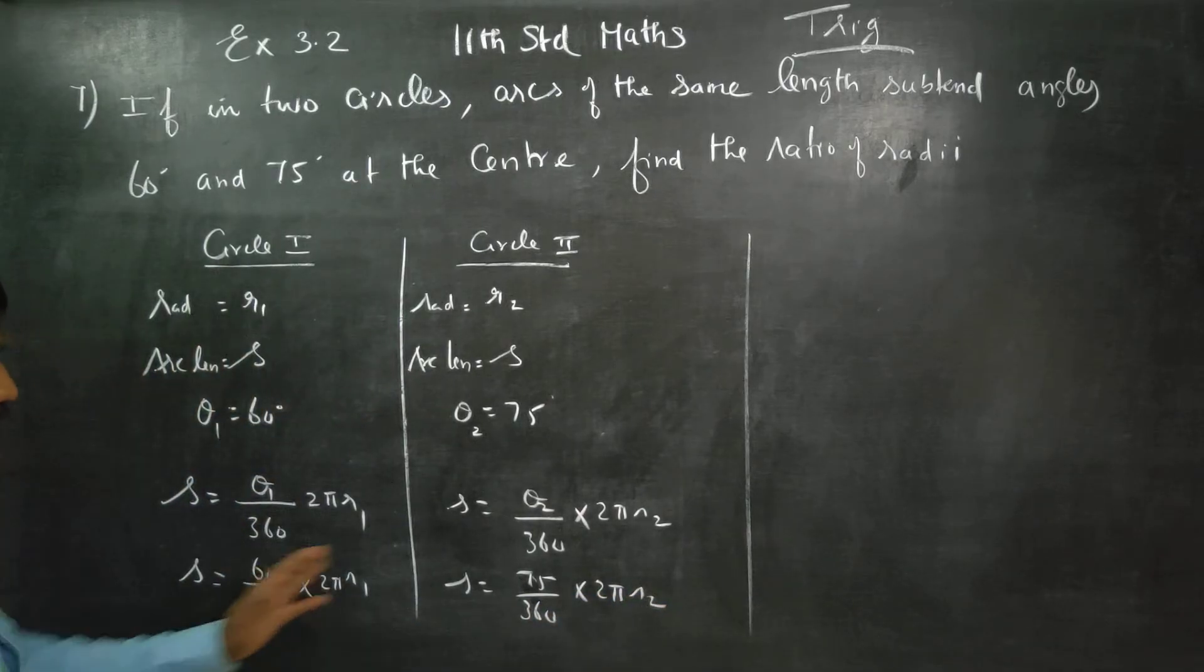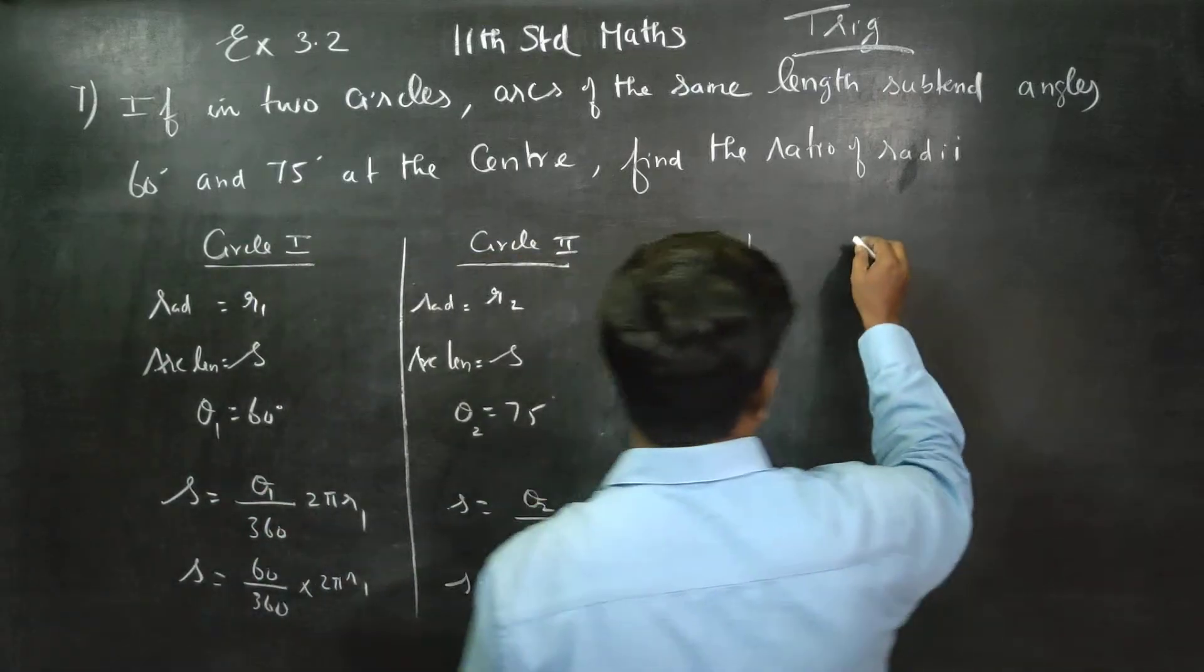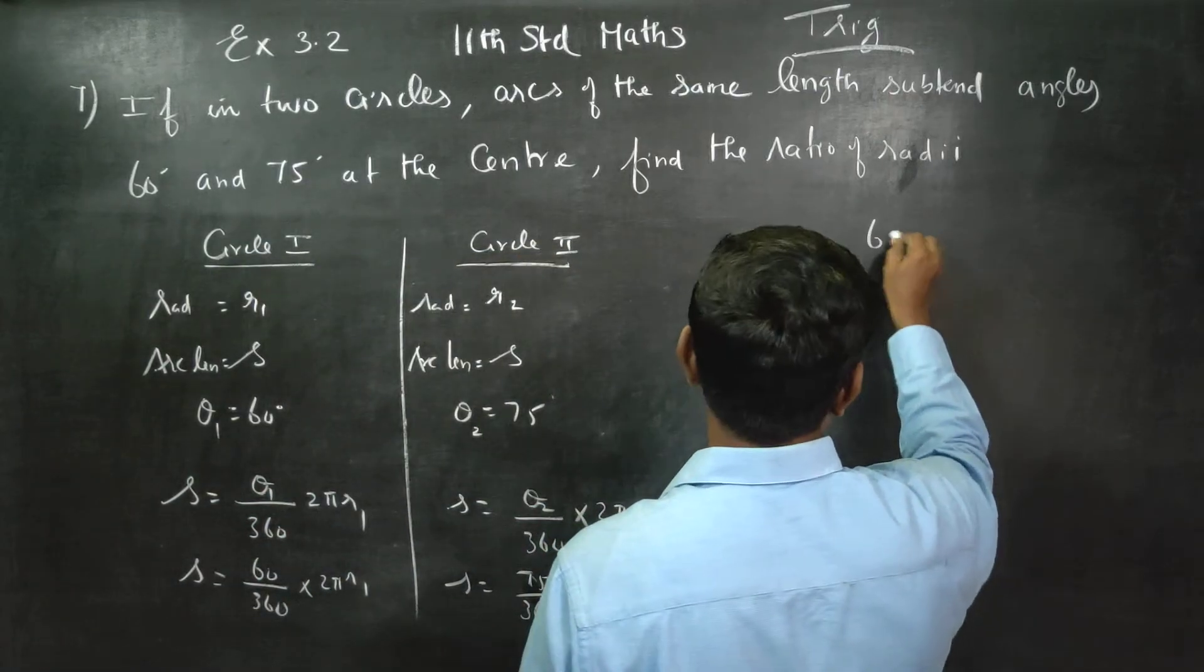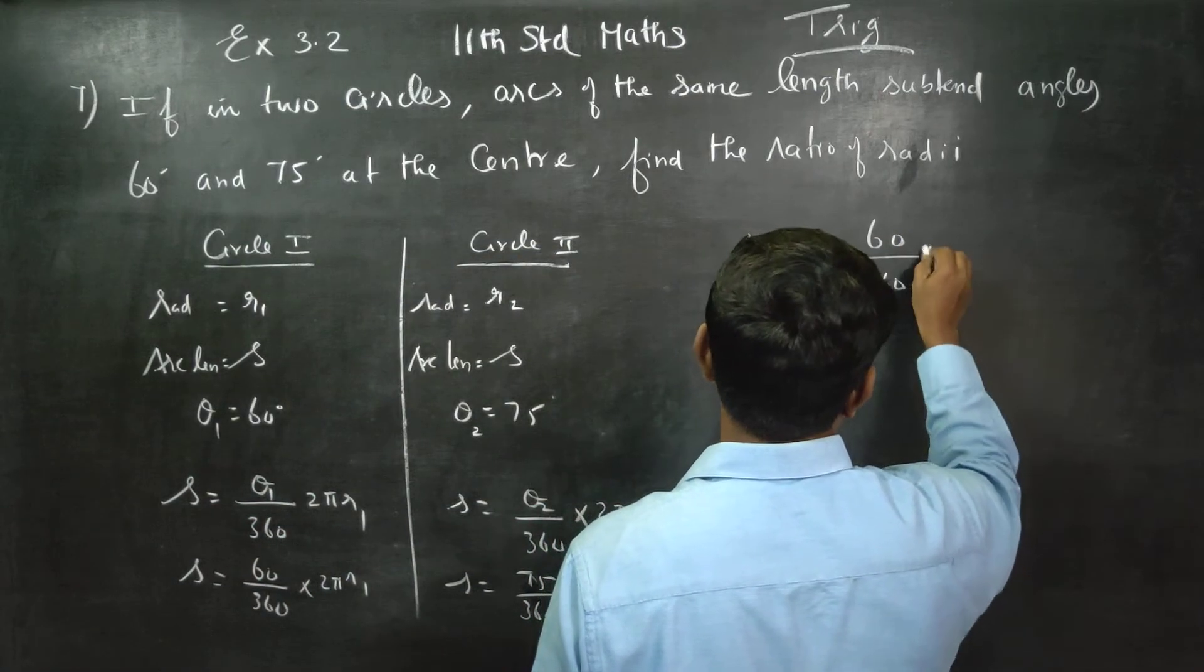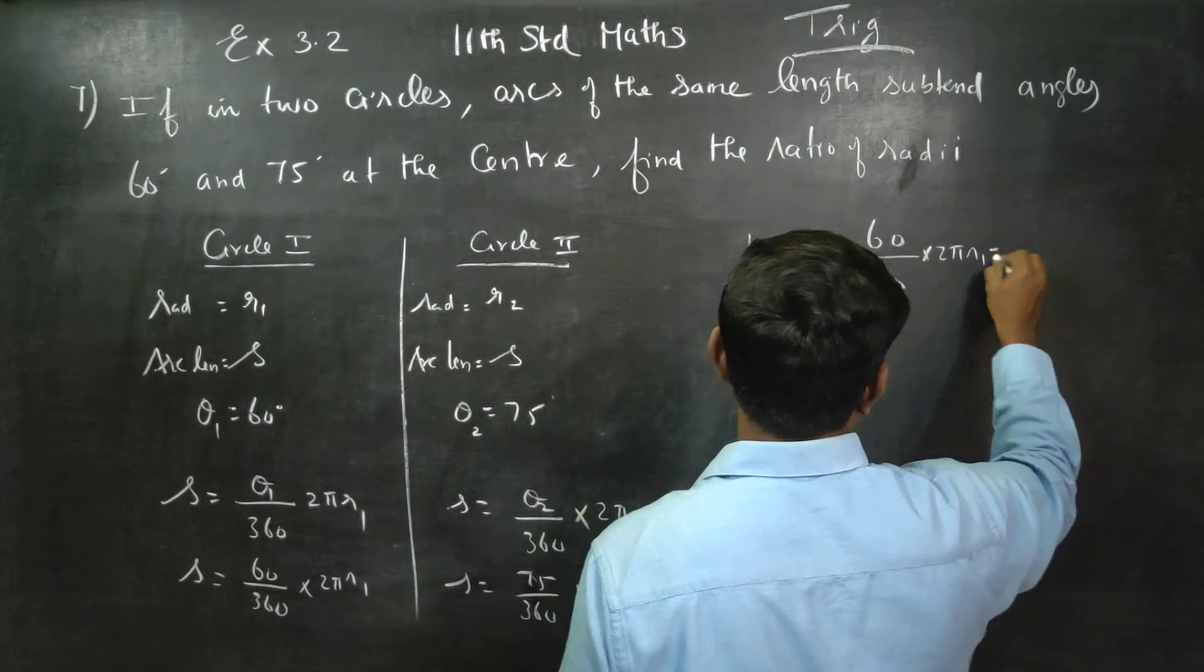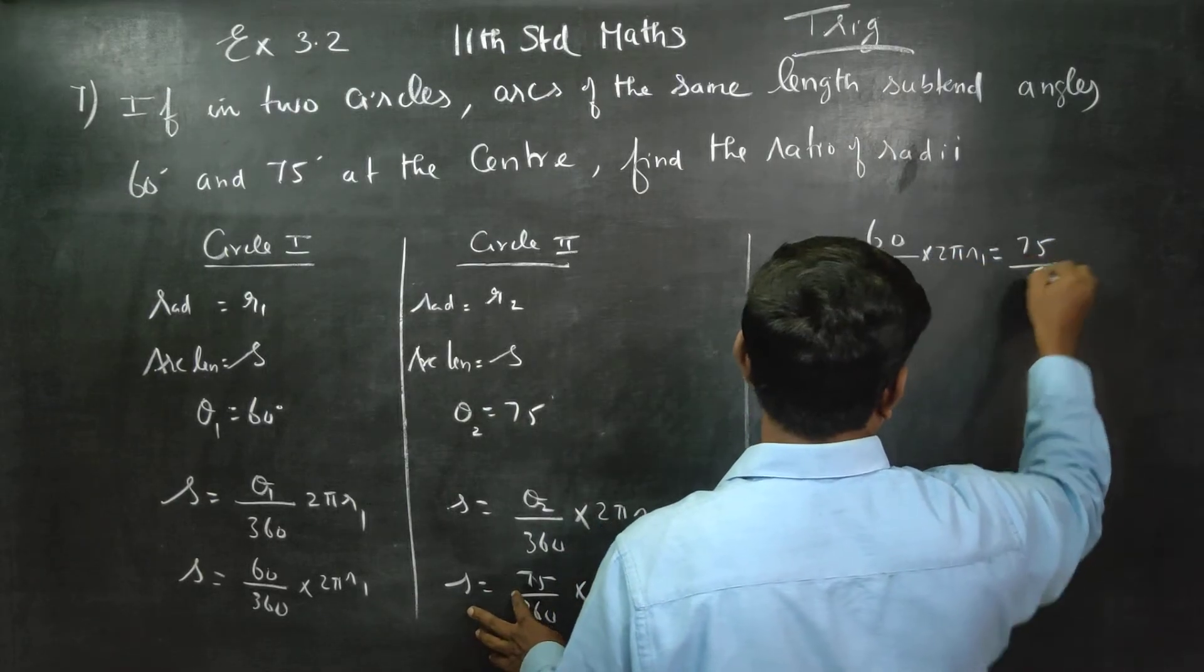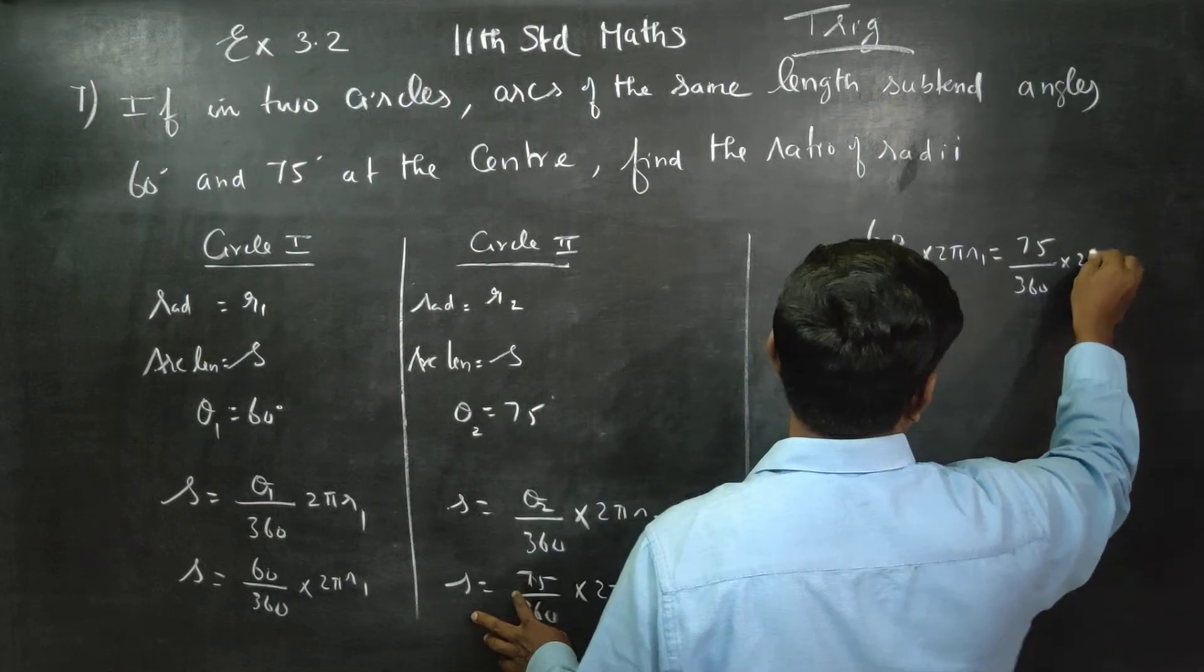Actually, both are equal. So 60 by 360 into 2 pi r1 equals 75 by 360 into 2 pi r2.